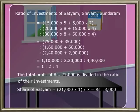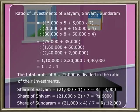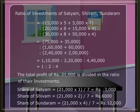The share of Satyam is 21,000 into 1 divided by 7, which is equal to rupees 3,000. The share of Shivam is 21,000 into 2 divided by 7, which is equal to rupees 6,000. The share of Sundaram is 21,000 into 4 divided by 7, which is equal to rupees 12,000.